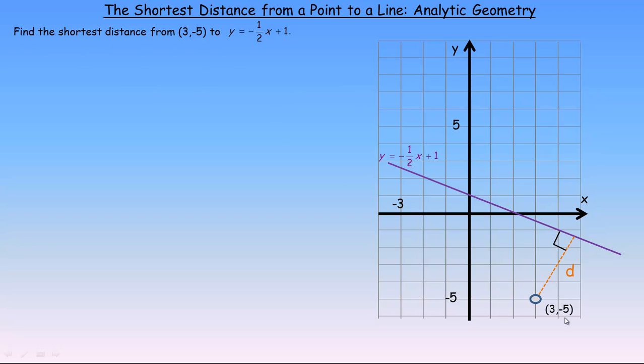So what we're trying to do is find the shortest distance from this 3, -5 point to the line. And the shortest distance is the perpendicular distance and if on your device that does not look like a right angle, it is supposed to be, depending on the resolution of your screen. This line, y equals negative 1 half x plus 1, has a slope of negative 1 half.